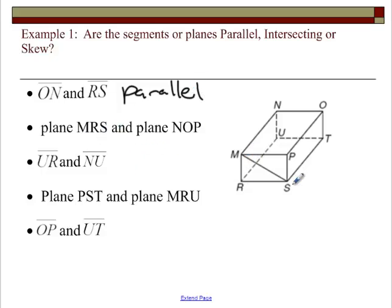Plane MRS, so we're talking about the front side. And plane NOP, that's the top. The front and the top intersect. UR and NU. NU is back here. UR is the bottom left. UN is up here. Those cross, so those are intersecting.